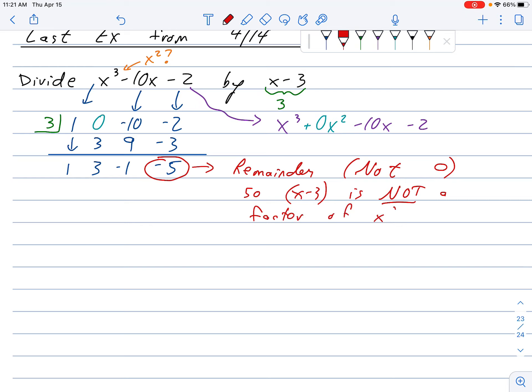So x minus 3 doesn't go in evenly. So x minus 3 is not a factor of x to the third minus 10x minus 2. And x equals 3 is not a zero. Meaning it's not an x-intercept. It's not a zero or it's not a root.